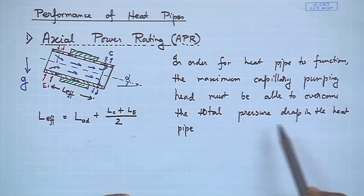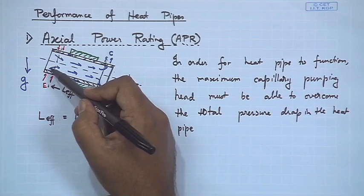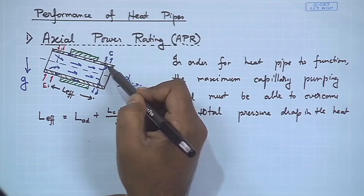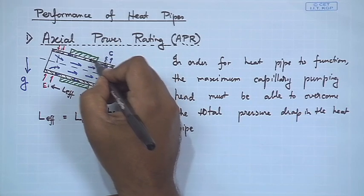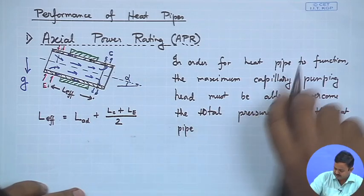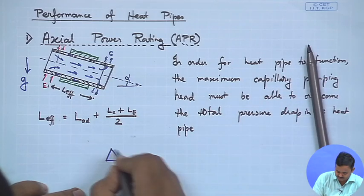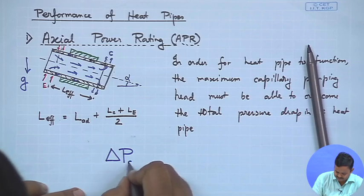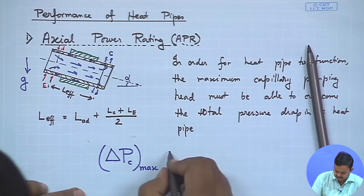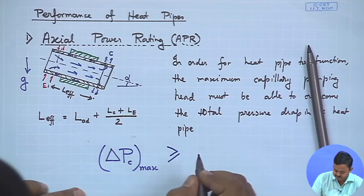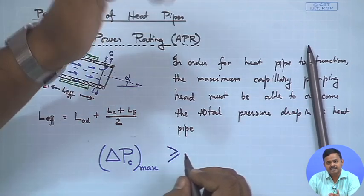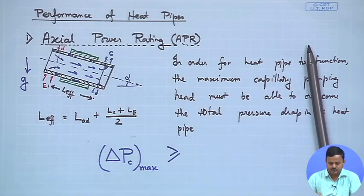The fluid first vaporizes, then the vapor flows through the core to the other end where it condenses, and in liquid form it flows back through the wick. So the maximum capillary pumping head, written as ΔP_c max, must be greater than or equal to the different pressure drops the fluid faces as it flows through the different sections of the heat pipe.